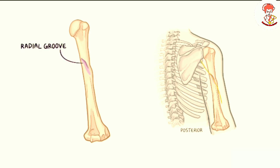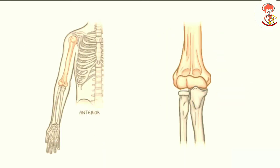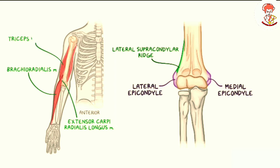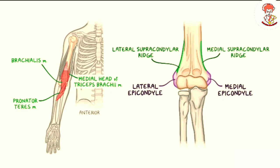On the posterior surface of the shaft there is a shallow but broad bone depression called the radial groove, which is where the radial nerve passes through. On the lateral side of the shaft there is a rough small bump called the deltoid tuberosity, which is where the deltoid muscle attaches. Towards the distal end, the humerus flattens out giving rise to two bony projections known as the medial and lateral epicondyles. On the lateral epicondyle there is a lateral supracondylar ridge where the extensor carpi radialis longus, brachialis, and triceps brachii muscles attach. Above the medial epicondyle there is a medial supracondylar ridge which attaches the medial head of the triceps, the brachialis, and the pronator teres.